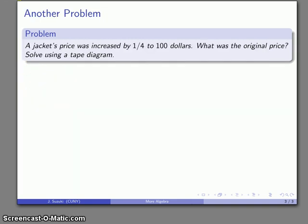Again, another classic problem. A jacket's price was increased by one-quarter to $100. What was the original price? And again, we can solve this algebraically and the most common wrong answer to this is to say that the original price was $75. And the reasoning is something along the lines of a quarter of $100 is $25, so the jacket's price increased by $25 and so on. That's not correct, though. And we'll see why by using a tape diagram.